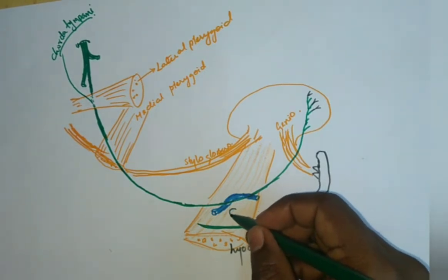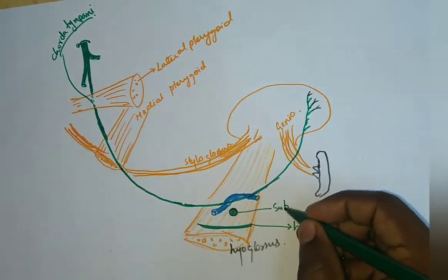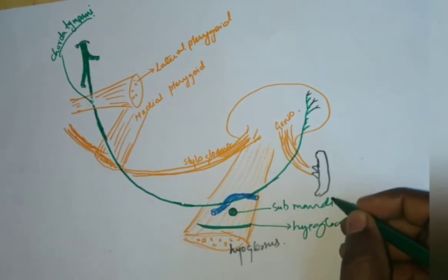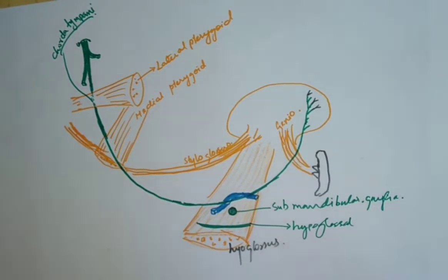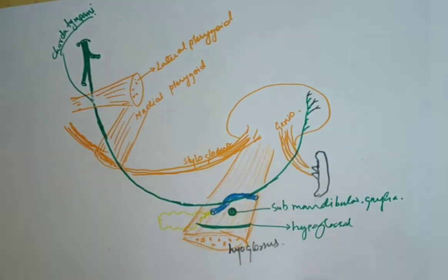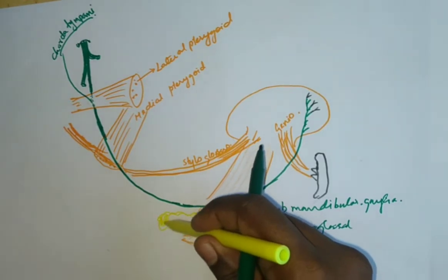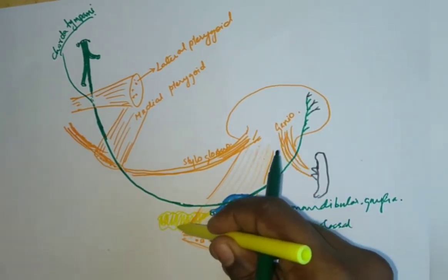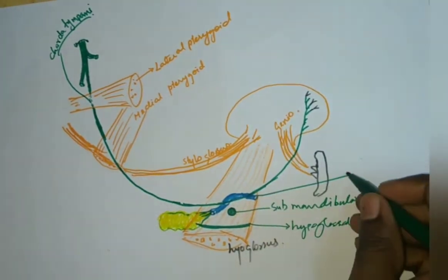Inferiorly, there is a ganglion related to the lingual nerve — that is the submandibular ganglion. Here will be the submandibular gland, and from the gland we have the starting of the duct — this is the submandibular gland and this is the submandibular duct.